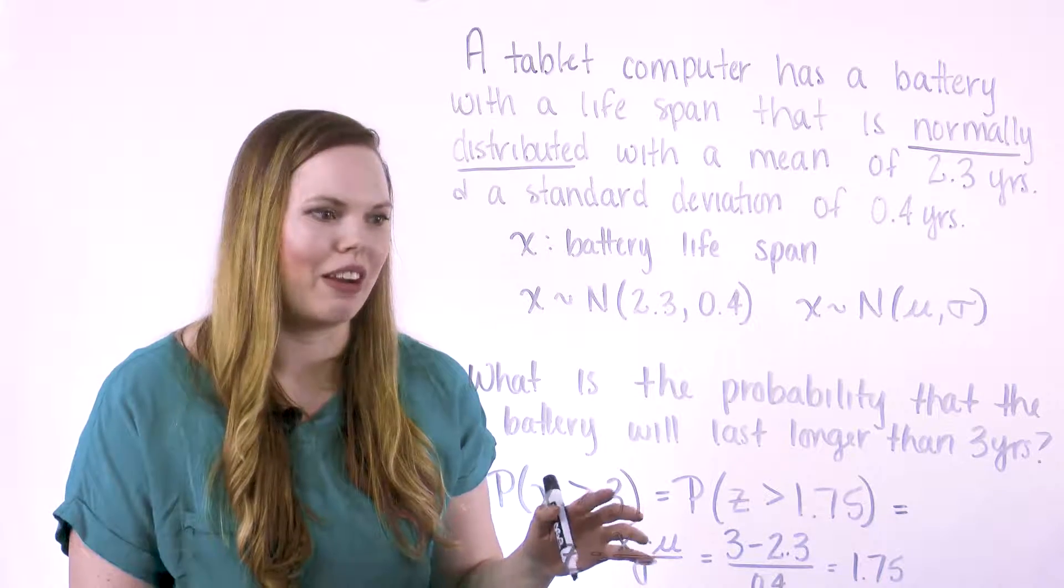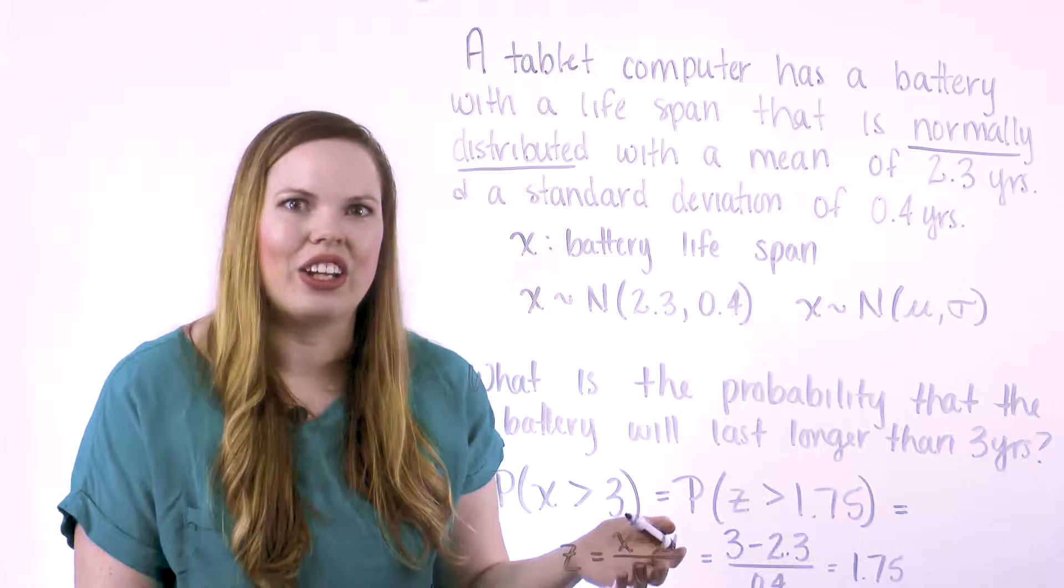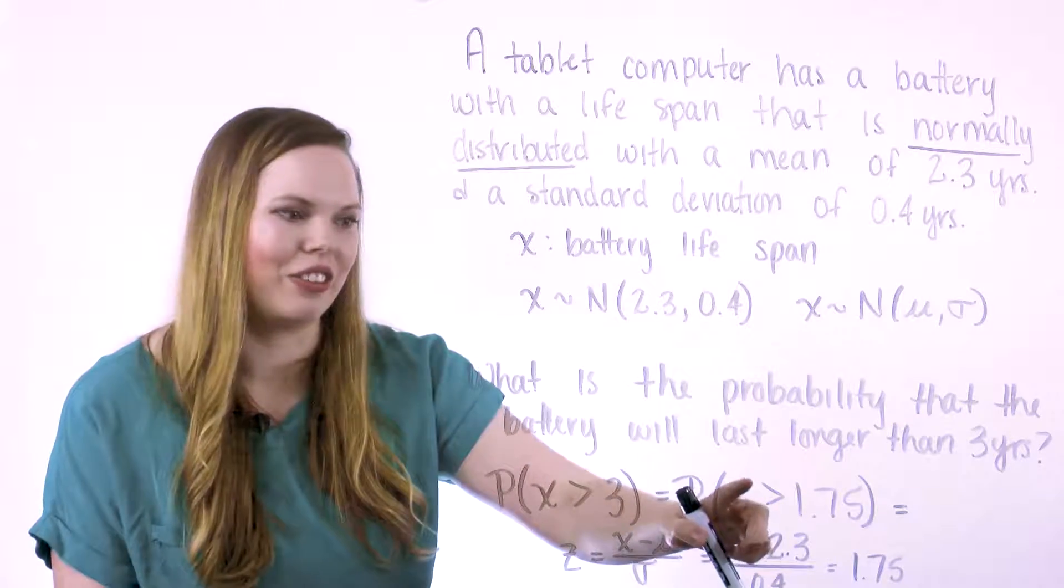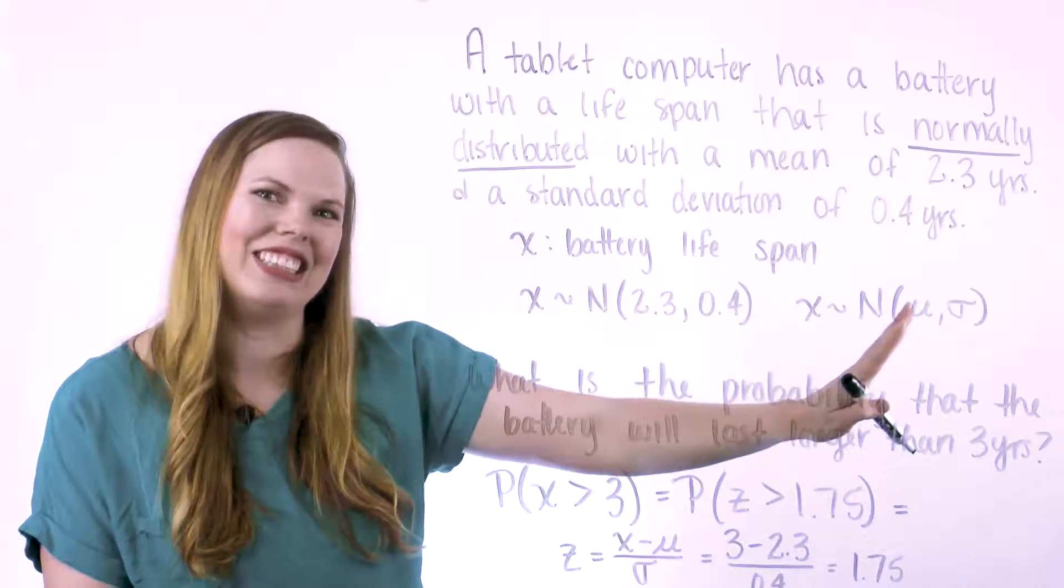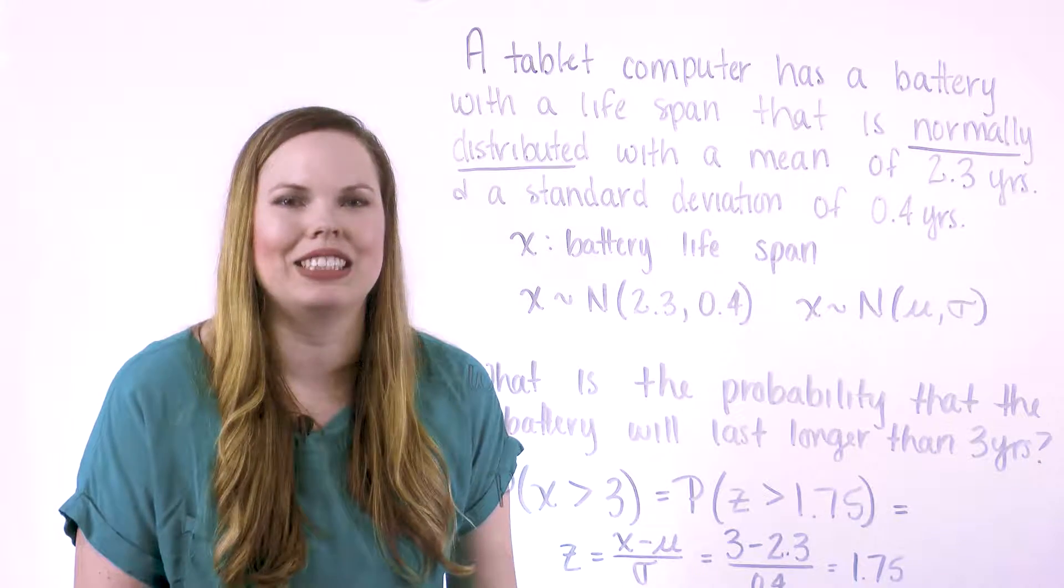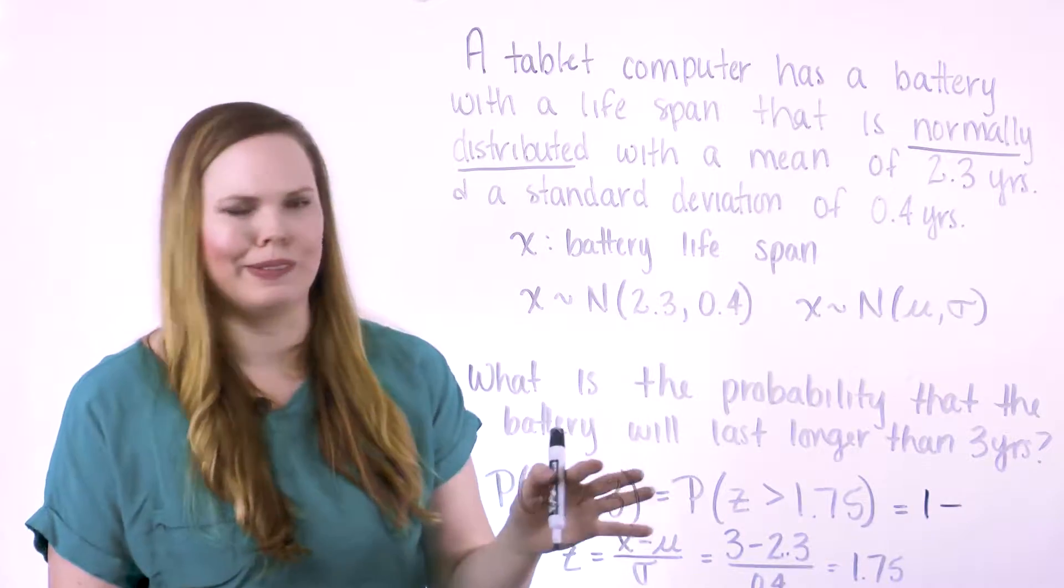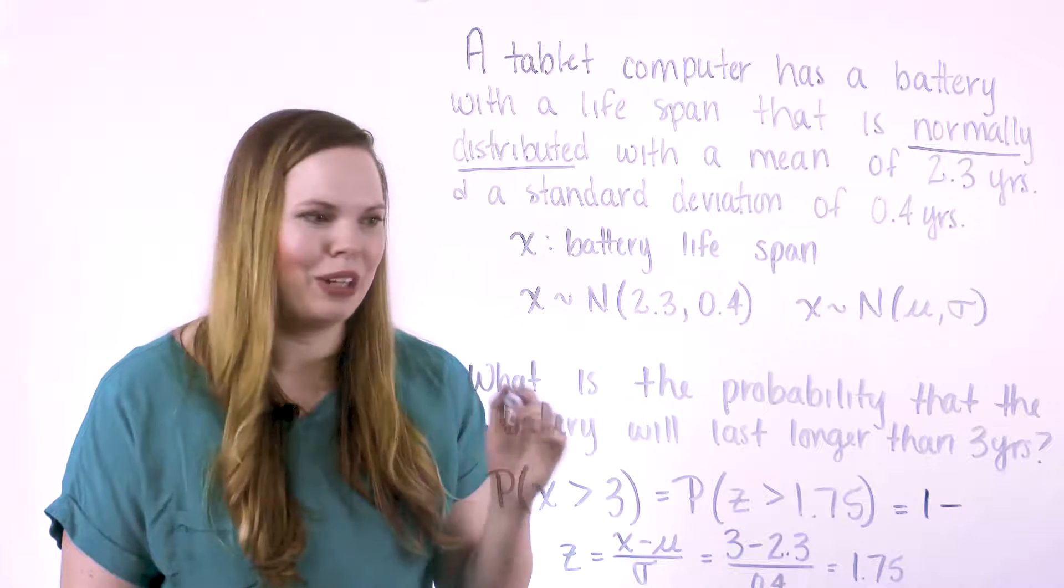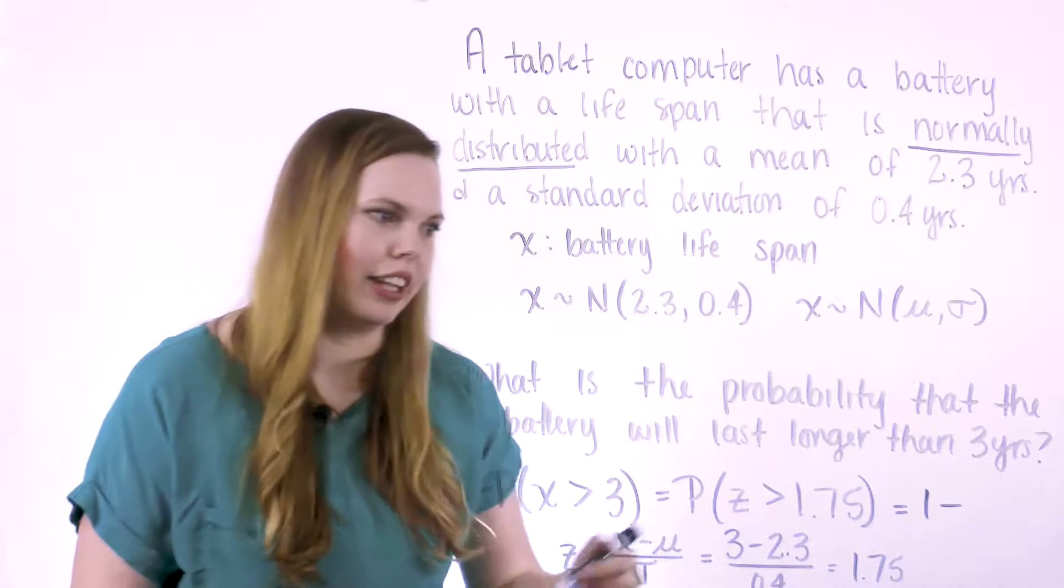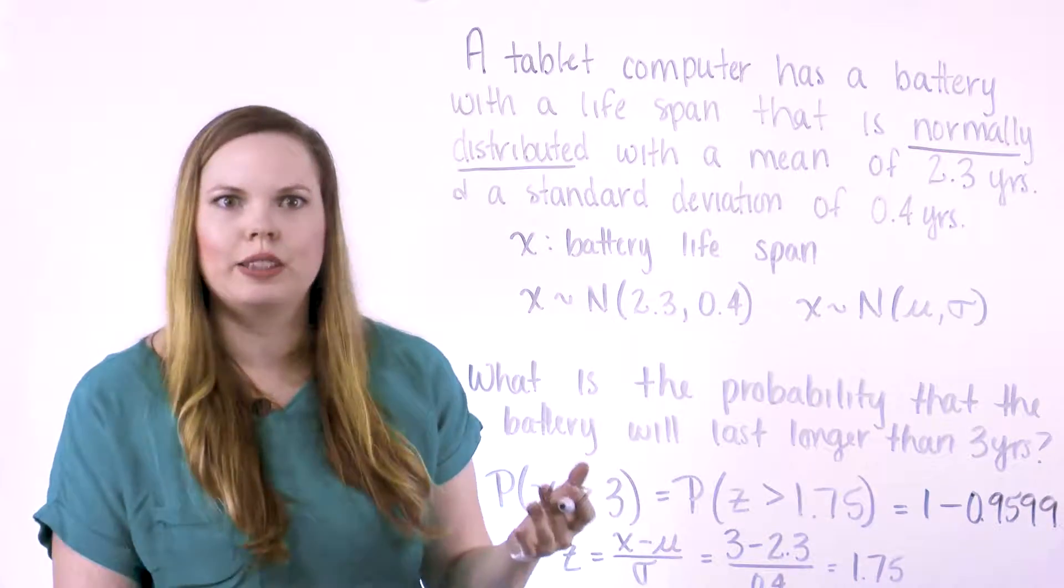But you're just going to look up this 1.75 in the table. But before we do that, we want to make sure that we are given the correct area that is wanting here. So we have to ask, is it greater than, is that going to be the area to the right, or is it going to be the area to the left? So greater than this way, so this is the area to the right, is what we're wanting here. And we know our table gives us the area to the left. So to get the area to the right, we have to do 1 minus the value in the table. So I'm going to get that up there really quick so I don't forget. And then I'm going to look up 1.75 in the table. And that is 0.9599.